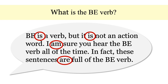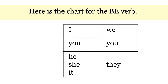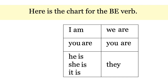Let's look at the verb chart for BE in the simple present. Let's start with the pronouns, and here are the forms of the BE verb. I am, you are, he is, she is, it is, we are, you are, and they are.